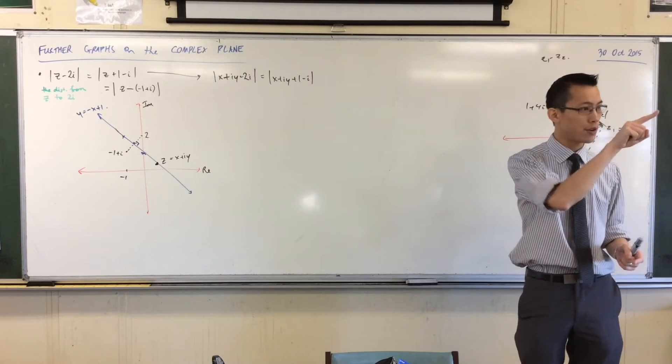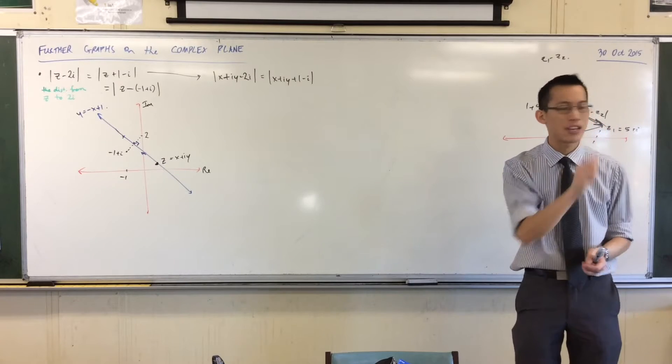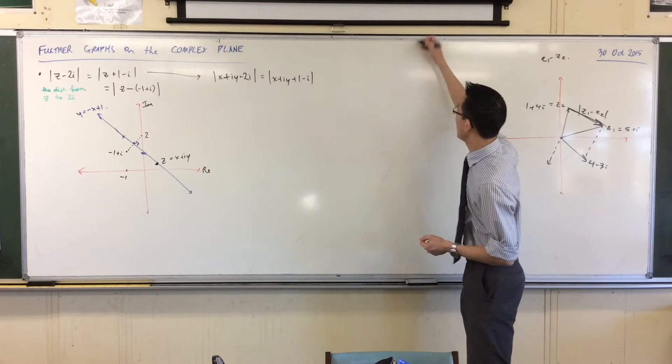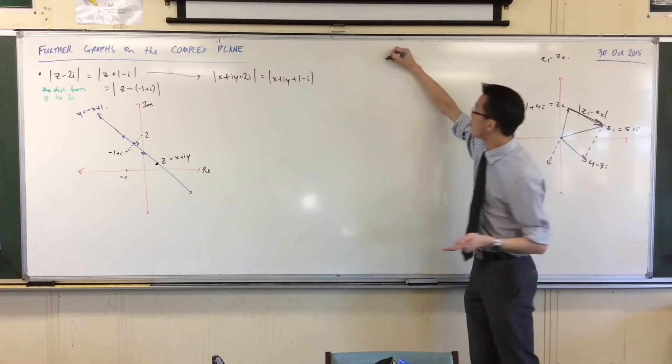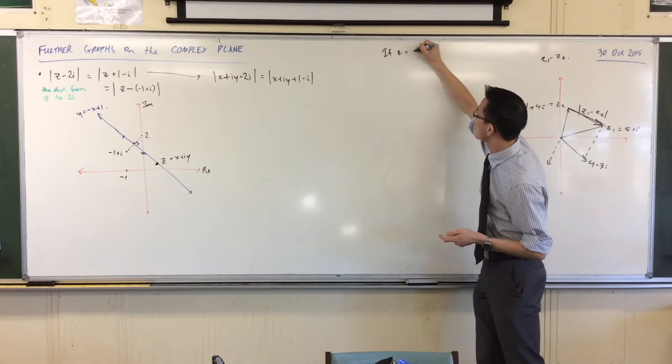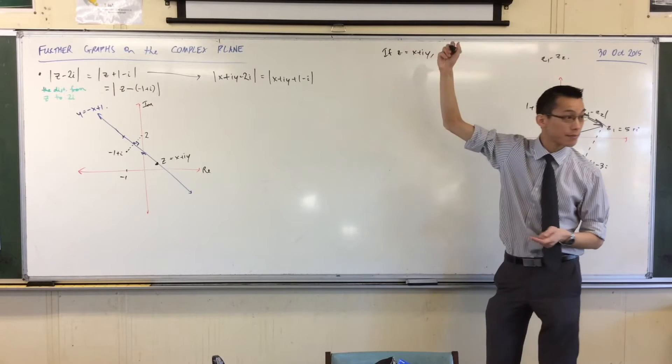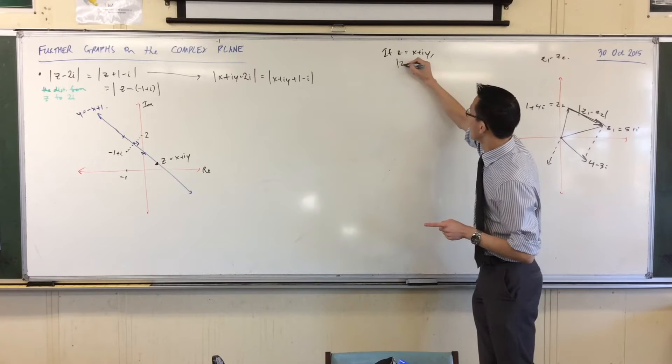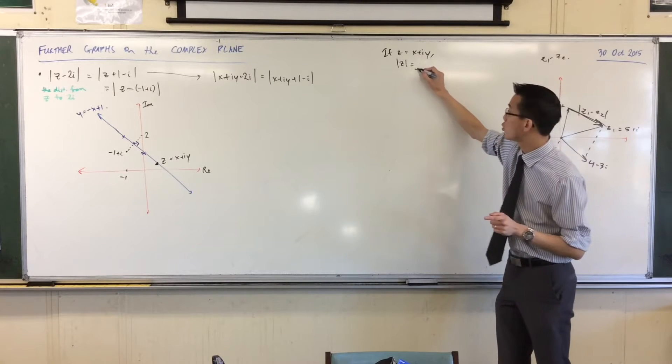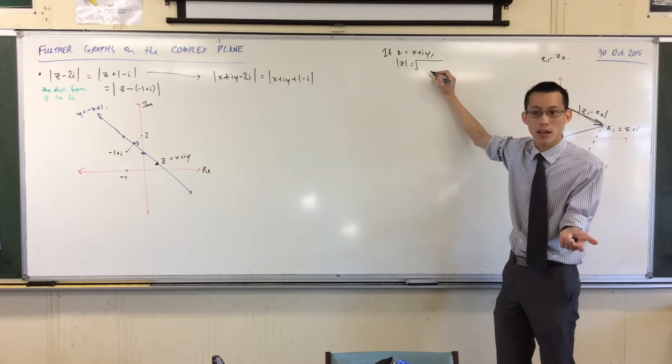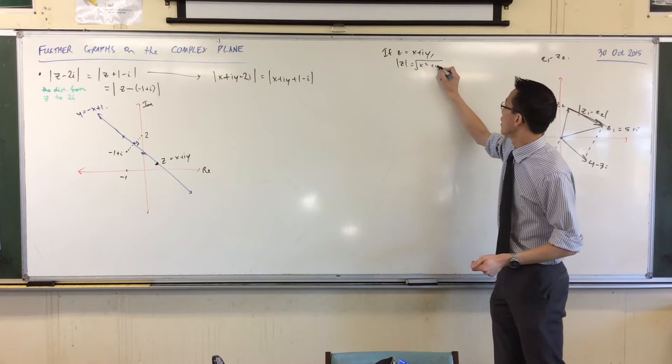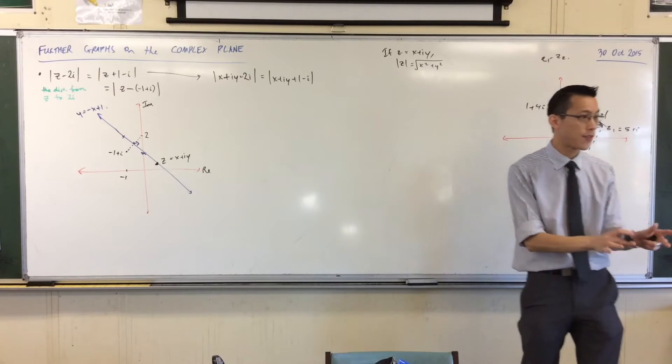Just watch out. Usually we would say if Z equals X plus iY, then mod Z is the square root of—we're using Pythagoras, aren't we? So this will be X squared plus Y squared. That's fine.